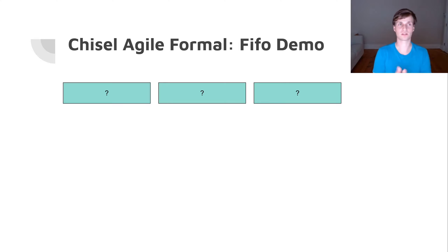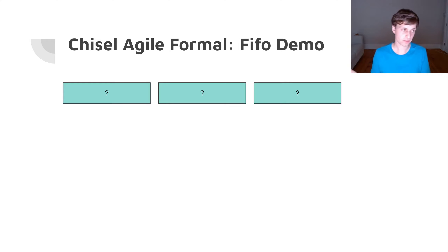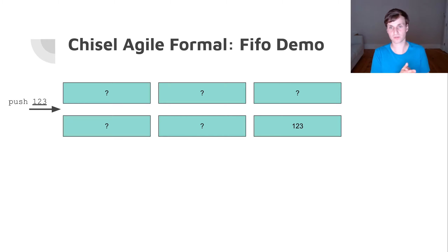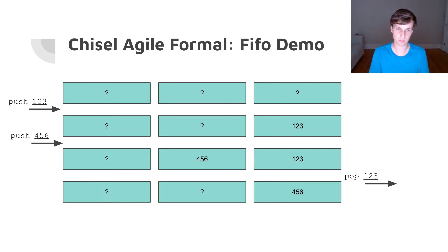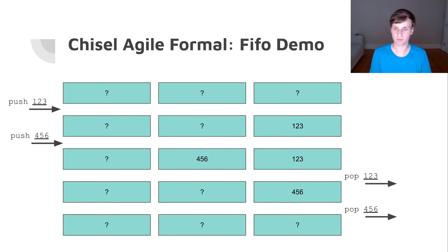This FIFO can consist of n registers — n is the depth of the FIFO. For depth three we have three registers. When you push something into the FIFO we expect the value to be in the rightmost free register. If we pop something, we take it out of the rightmost register and shift everything to the right. That's how this FIFO is supposed to operate.